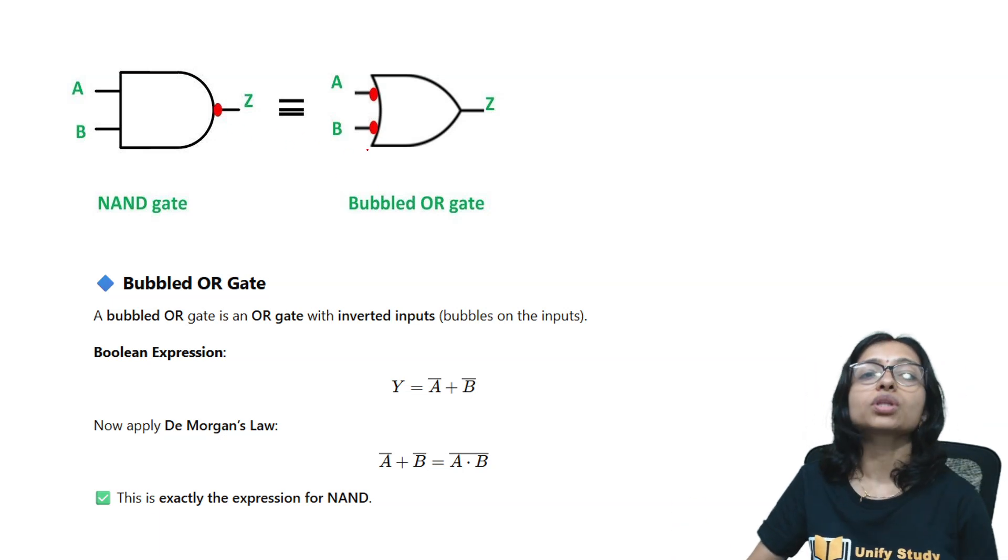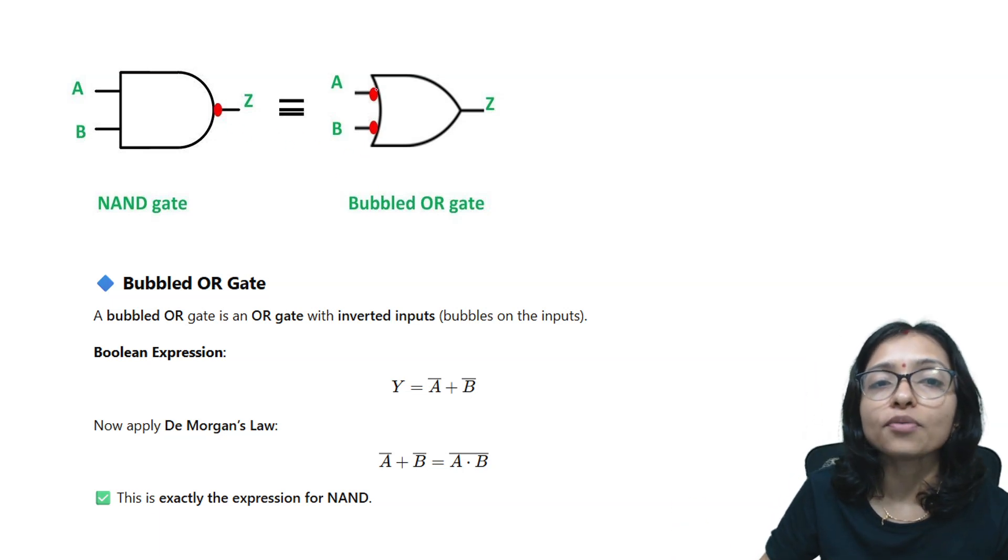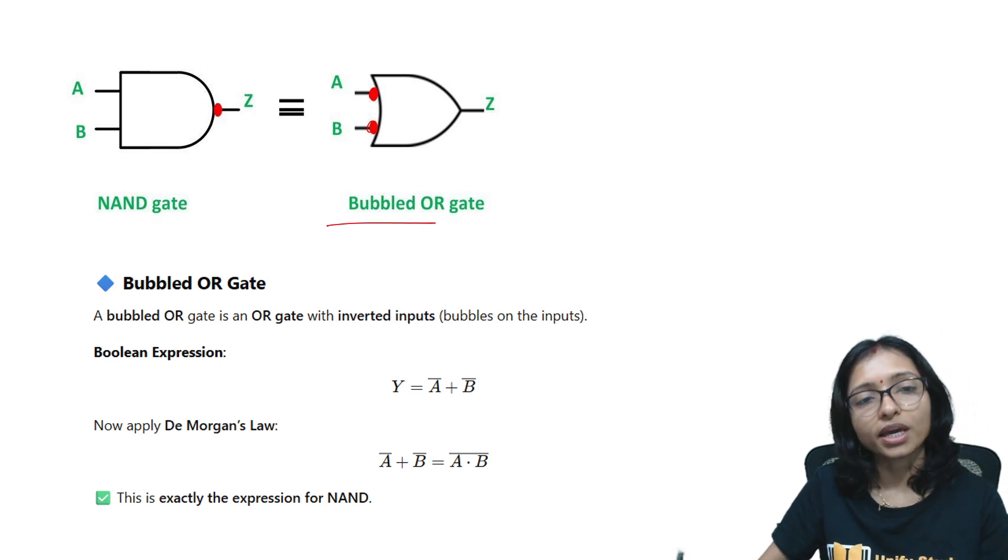But here when they are asking question that bubbled OR or bubbled AND, actually bubbled OR or bubbled AND this is called according to the input. At the time of input whenever you are putting this, this is called bubbled OR. So that is why NAND, NAND is this not AND. NAND means we are telling it is not AND and bubbled OR is this one.